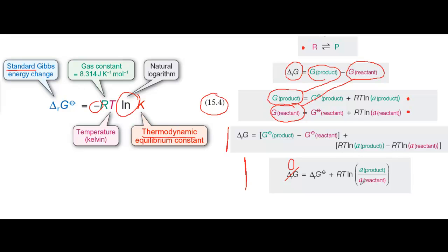And secondly, at equilibrium, A product over A reactant is equal to the equilibrium constant K. So now we've got zero equals delta G standard plus RT log K. If we now take delta G to the left-hand side and change the sign, you've got equation 15.4.